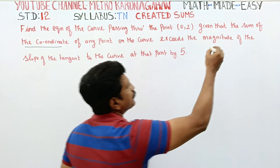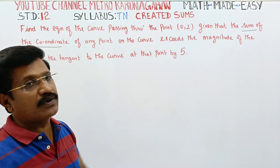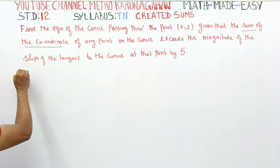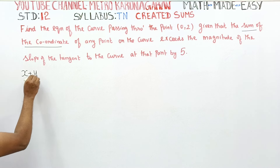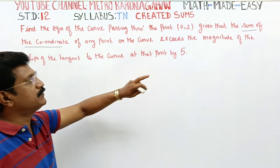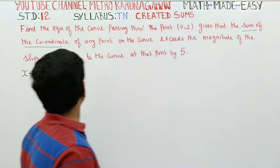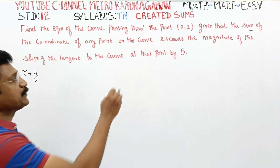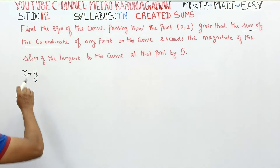The coordinate — sum of the coordinates: x-coordinate, x and y coordinate, y coordinate. For a general point, the sum of the coordinates is x plus y. Sum of the coordinates of any point on the curve.